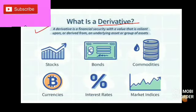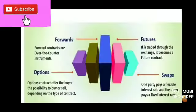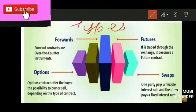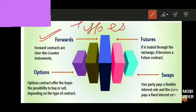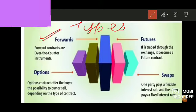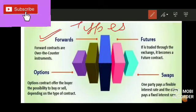The first type is forward contracts, which are over-the-counter instruments. In forward contracts, everything — the rate, date, performance quality, quantity of goods, and place of delivery — is decided at the time of entering into the contract, but the actual implementation takes place at a future date.